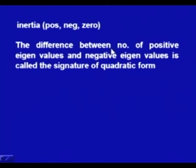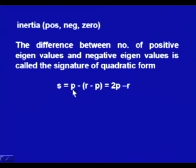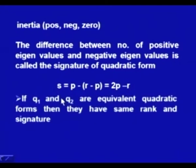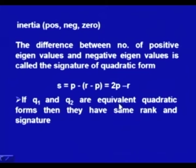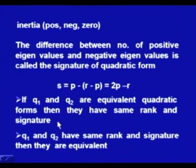The difference between the number of positive eigenvalues and negative eigenvalues is called the signature of the quadratic form. If there are p positive eigenvalues and the rank is r, then the number of negative eigenvalues is r − p, and the signature is p − (r − p) = 2p − r. If Q₁ and Q₂ are equivalent quadratic forms, then they have the same rank and the same signature. Conversely, if Q₁ and Q₂ have the same rank and signature, then they are equivalent.